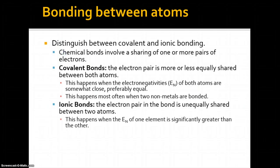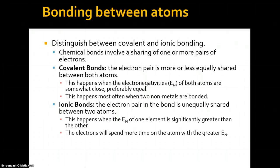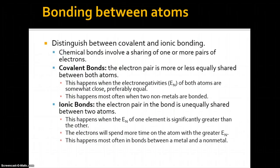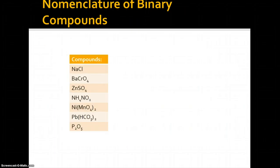Ionic bonds are where the electron pair in the bond is unequally shared between the two atoms. This happens when the electronegativity of one element is significantly greater than the other — very unequal. When that happens, the more electronegative atom takes essentially all of the electron density for itself, so the electrons spend more time on the atom with the greater electronegativity. This happens most often in bonds between a metal and a nonmetal.